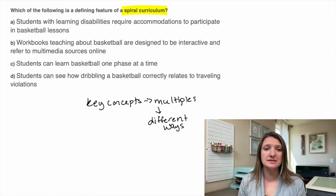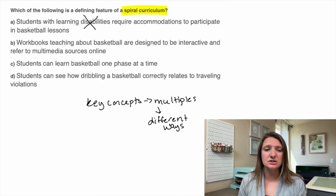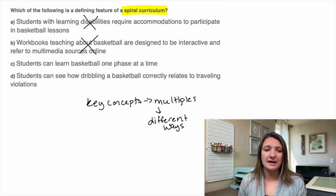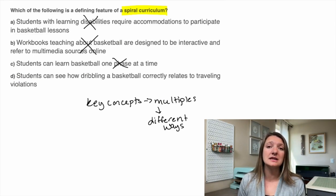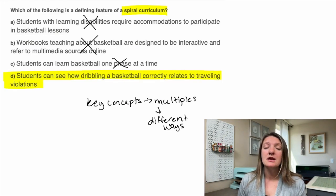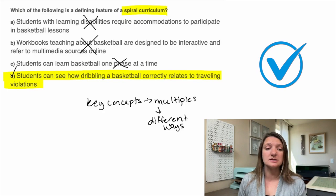A, students with learning disabilities require accommodations to participate in basketball lessons — disability doesn't relate to this. B, workbooks teaching about basketball are designed to be interactive and refer to multimedia sources online — interactive is not really part of that. C, students can learn basketball one phase at a time — that's kind of in one sitting. D, students can see how dribbling a basketball correctly relates to traveling violations — this is key in that depth. So the answer would be D.